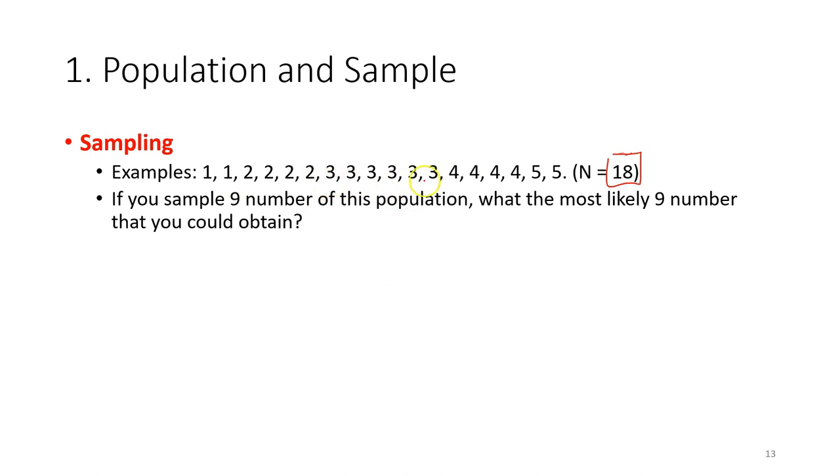So it's either 3, 4, or 2, because they have so many observations so it's more likely these numbers you can get first. And because the number 5 and number 1 is quite rare, so the chances that you get those numbers will be lower.